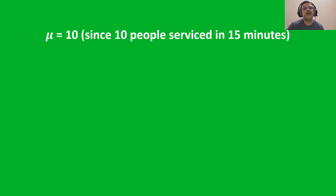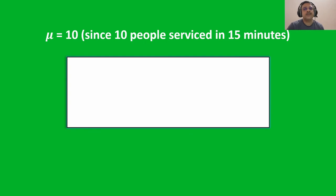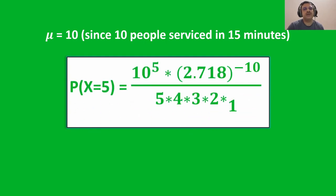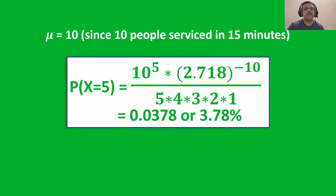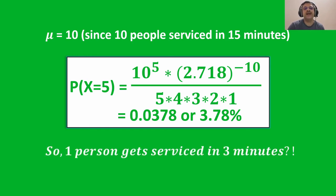Let us calculate the probability of 5 people being serviced in 15 minutes. Here, we know that Mu is 10 since 10 people are serviced in 15 minutes. Substituting the values in this equation, we get the probability for X equal to 5 as 0.0378, or 3.78%. So intuitively, if 5 people get serviced in 15 minutes with a probability of 3.78%, then 1 person should get serviced in 3 minutes with the same probability.